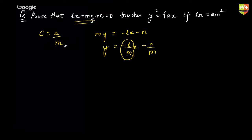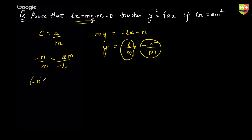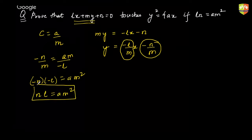Just replace C — this is going to play the role of C. So C = a/m. Cross multiply: -n × -L gives ln = am², which is the required condition for this line to be a tangent to this parabola.